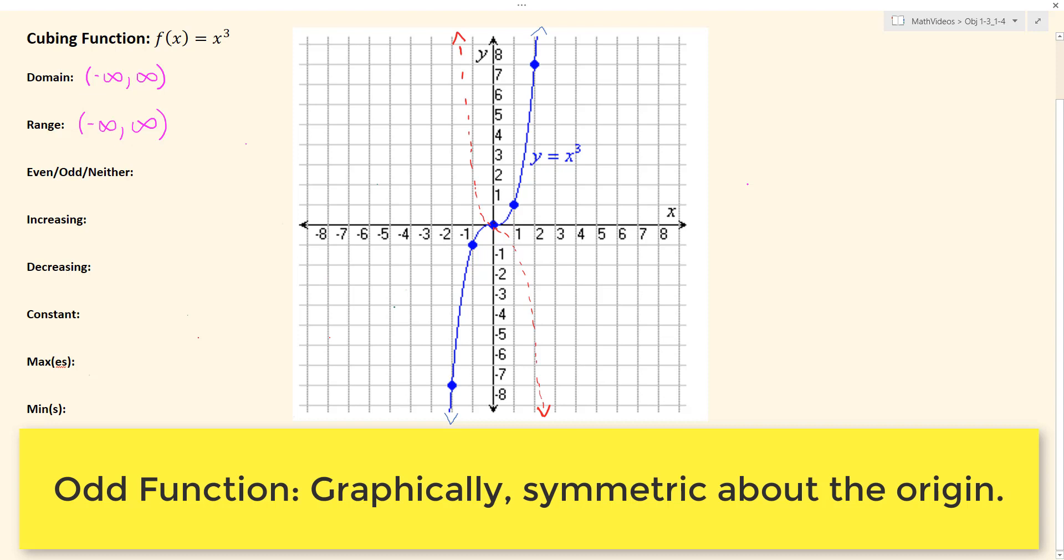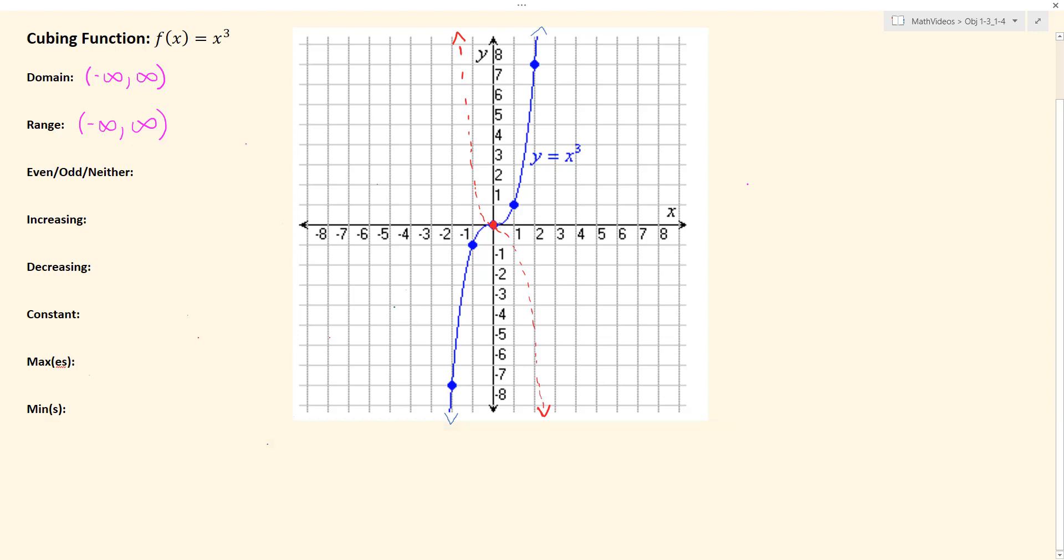For an odd function, we're saying that we're reflected through the origin, which is this physical point here at (0,0). And to reflect through the origin, you can think of it as a reflection across the y-axis and the x-axis.